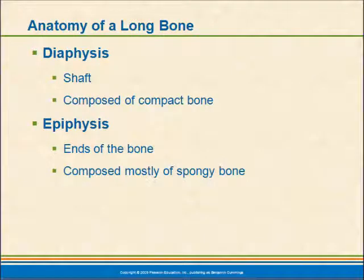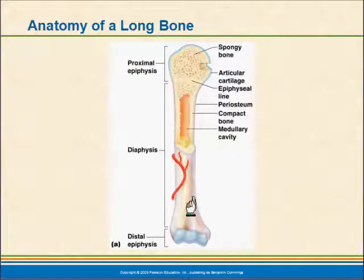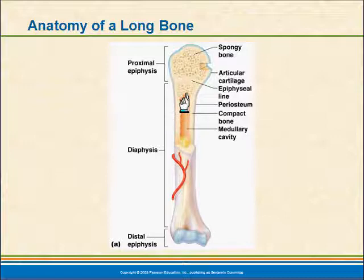As we move on, we'll start talking about the anatomy of a long bone. The shaft is composed of compact bone and is referred to as the diaphysis. The ends of the bone are called the epiphysis — these are mostly spongy bone, but they still have compact bone on the outside. If you were to look at a long bone, you'd see compact bone through the shaft, a hollow area in the middle, and then spongy bone at the ends.